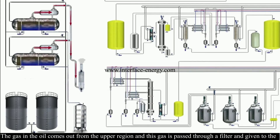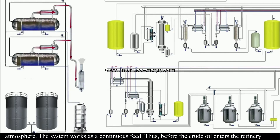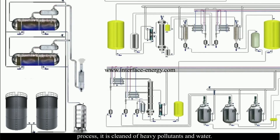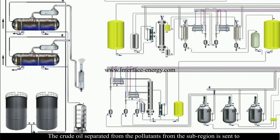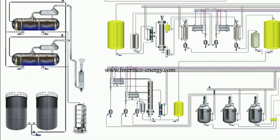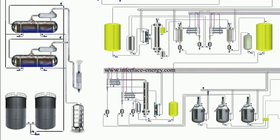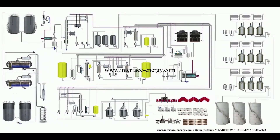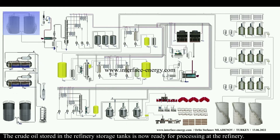The gas in the oil comes out from the upper region and is passed through a filter and released to the atmosphere. The system works as a continuous feed. Thus, before the crude oil enters the refinery process, it is cleaned of heavy pollutants and water. The crude oil separated from the pollutants is then sent to the refinery storage tanks.